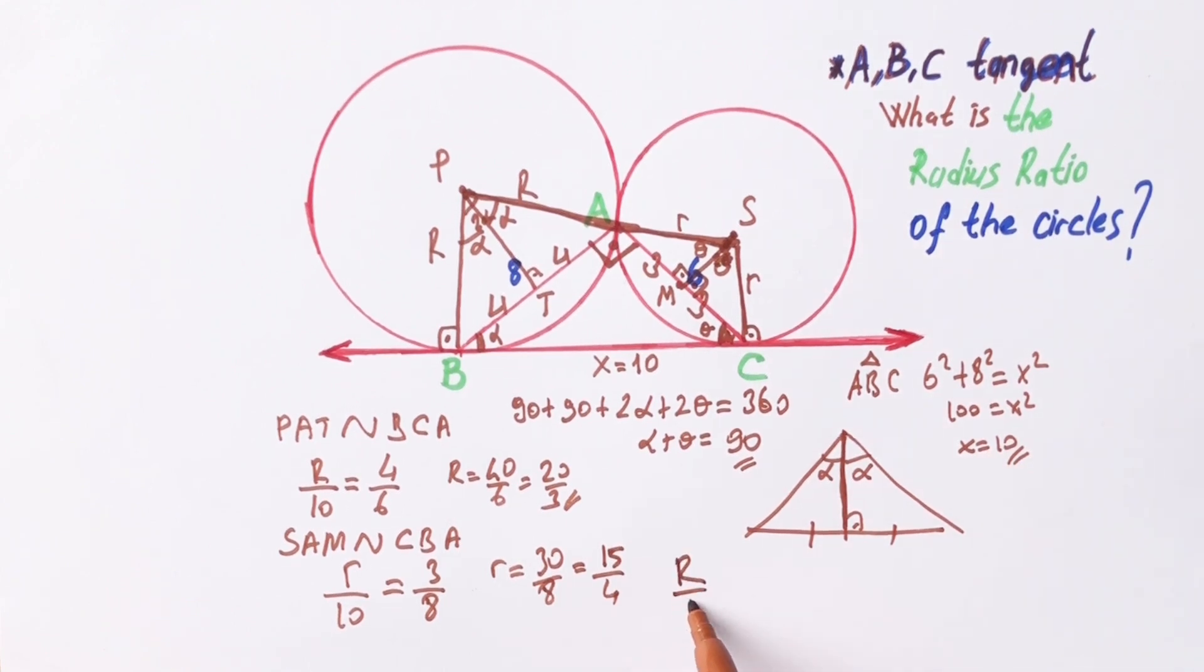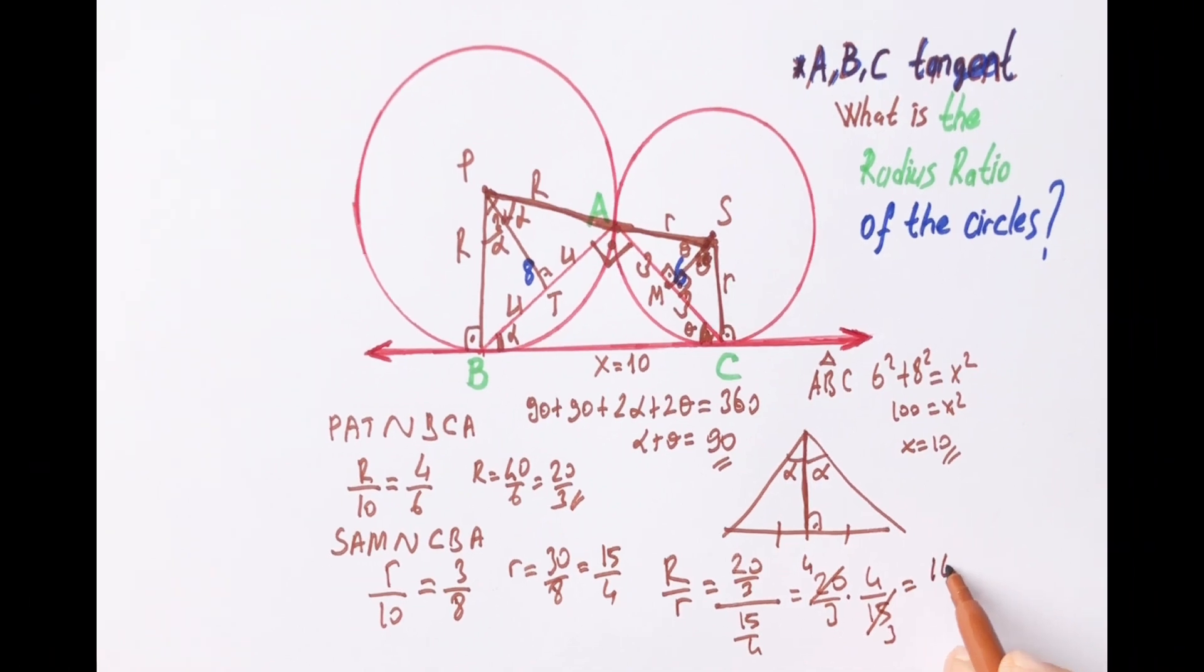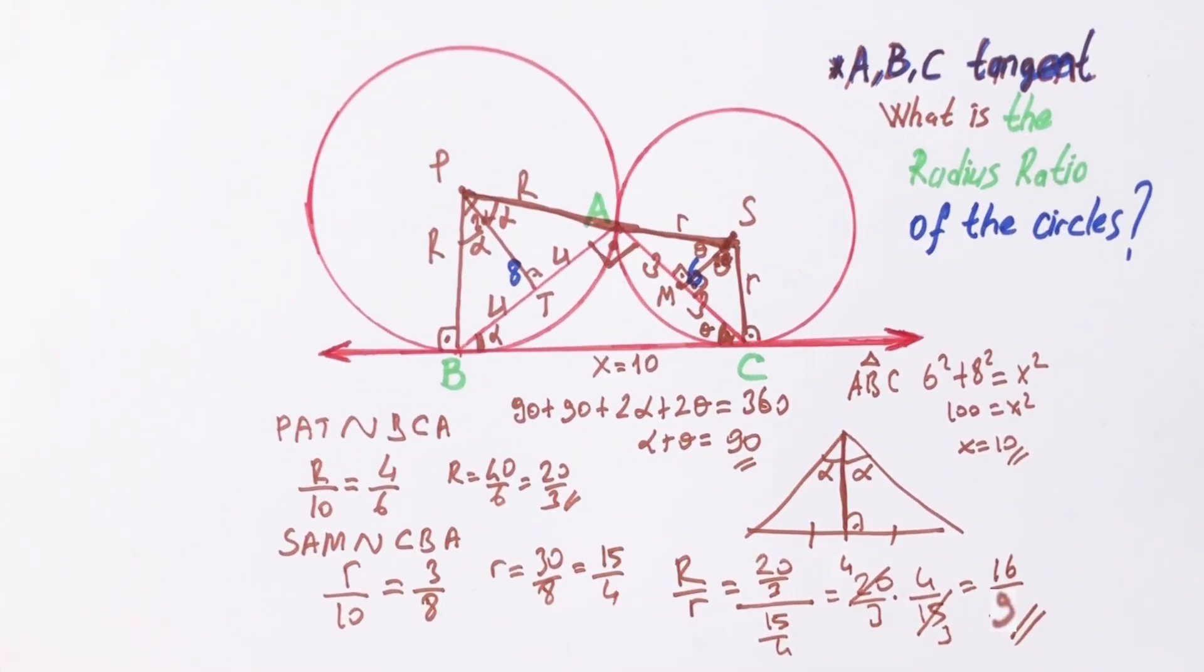For the radius ratio of the circles, 20 over 3 divided by 15 over 4, so capital R over r equals 16 over 9. Thanks.